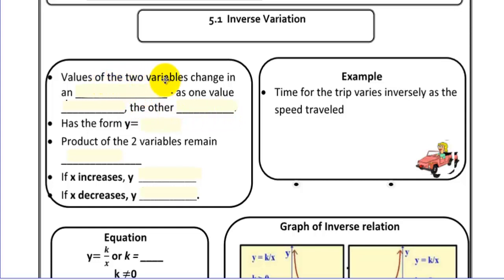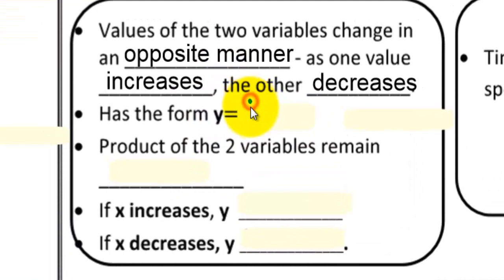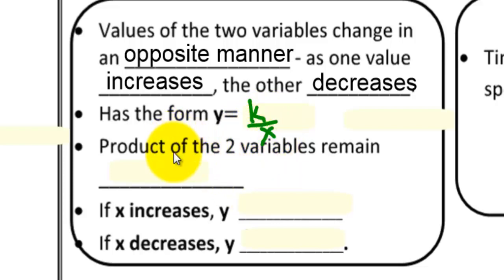Values of the two variables change in an opposite manner. As one value increases, the other decreases. Inverse variation has the form y equals k divided by x. So the product of the two variables remains constant.